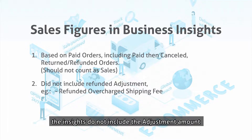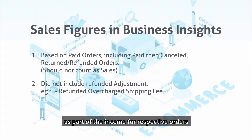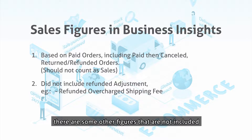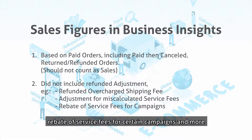Second of all, the insights do not include adjustment amounts such as refunded overcharged shipping fees. I would prefer to see the refunded fees as part of the income for respective orders. From what I observed, there are some other figures not included, like the adjustment for miscalculated fees, rebate of service fee for certain campaigns, and more.